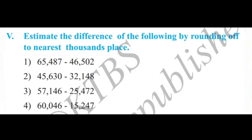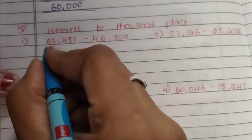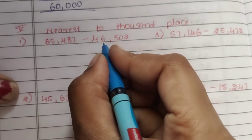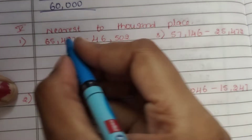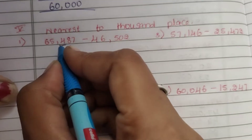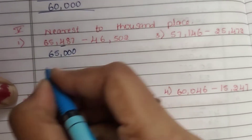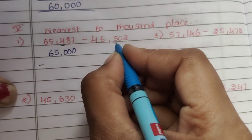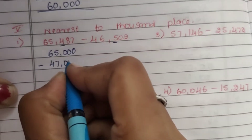That was addition. Now for the 5th main: estimate the difference of the following by rounding off to nearest thousands place. 5th main, first question: 65,487 minus 46,502. Round to 1,000s place — look at the hundreds digit. Here it's 4, so 65,000. For 46,502, the hundreds digit is 5, so it rounds up to 47,000.